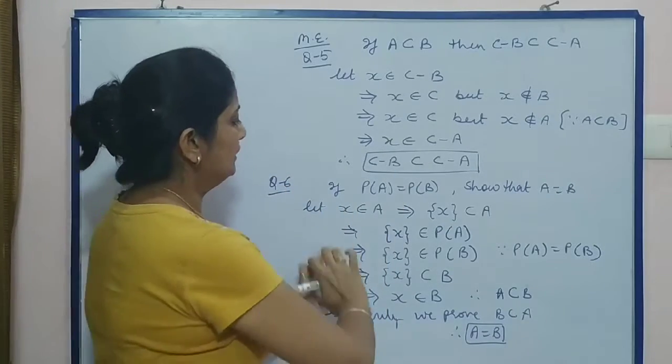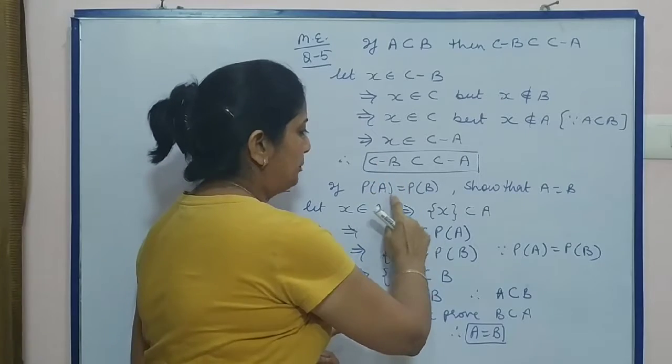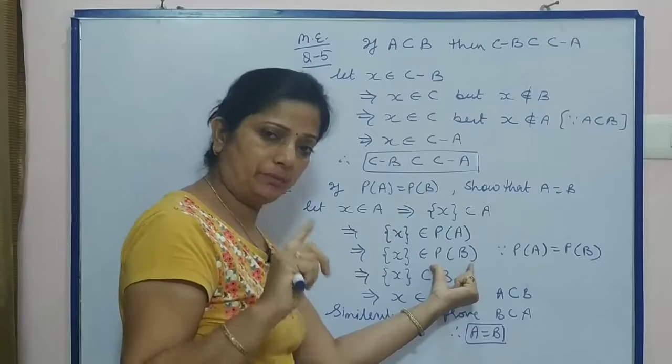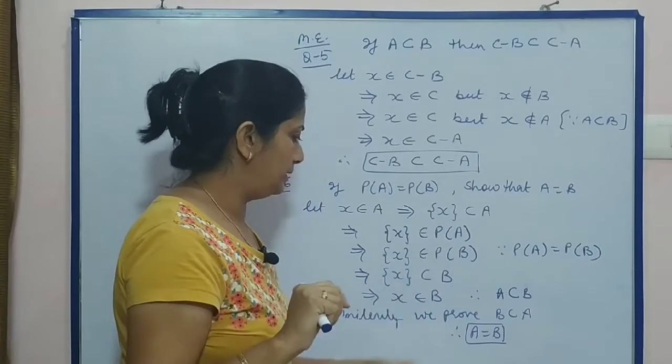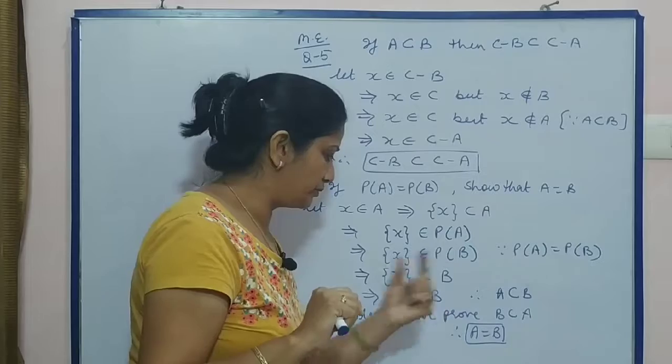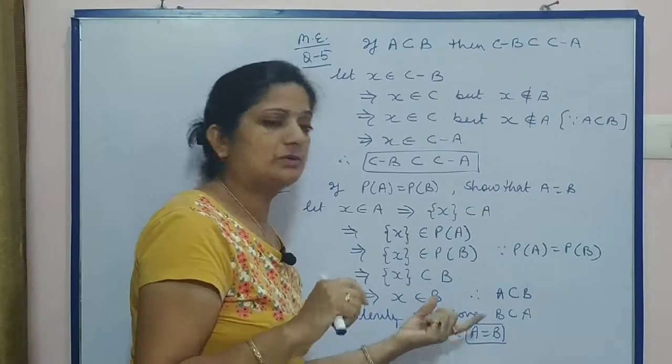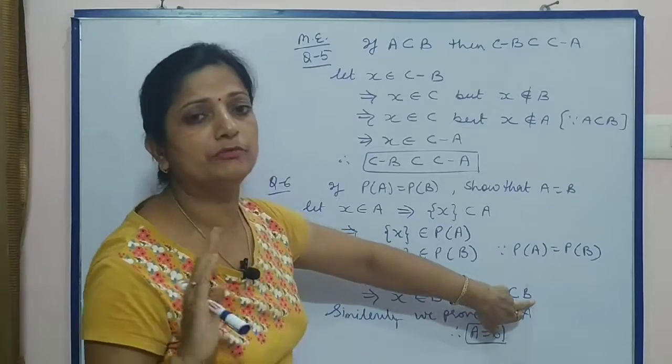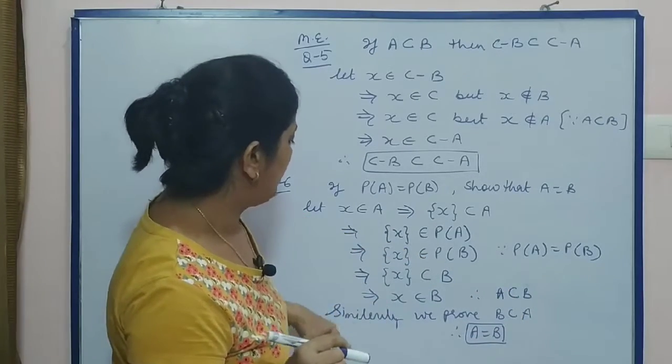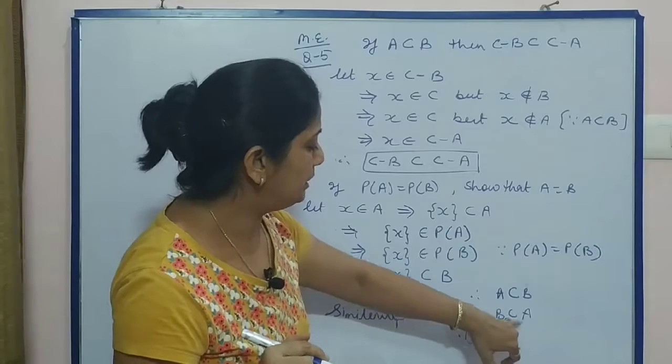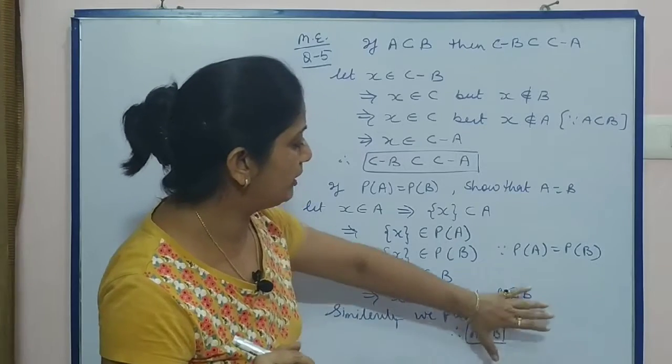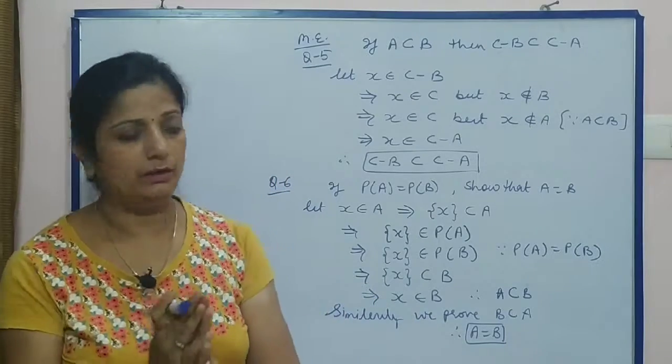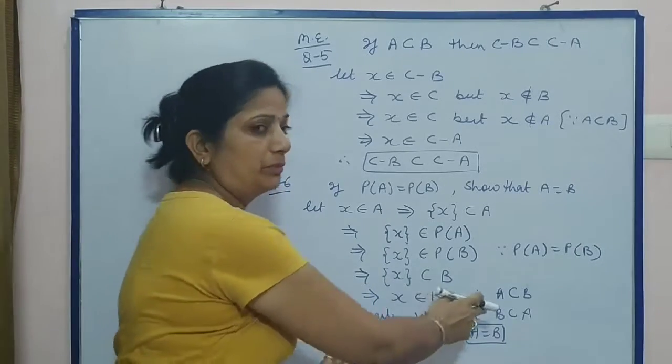Now, since we are given P(A) equals P(B), therefore P(A) is replaced by P(B), then this set belongs to P(B), which implies this set is subset of B, and x belongs to B. So we have proved A is subset of B. In the same way, we can prove that B is subset of A. When A is subset of B and B is subset of A, that means A equals B. Similarly, we prove.